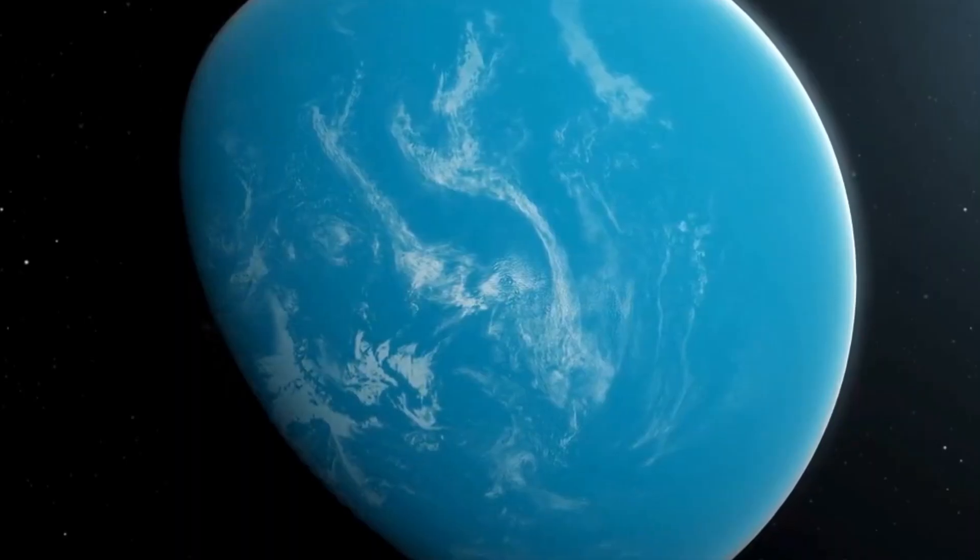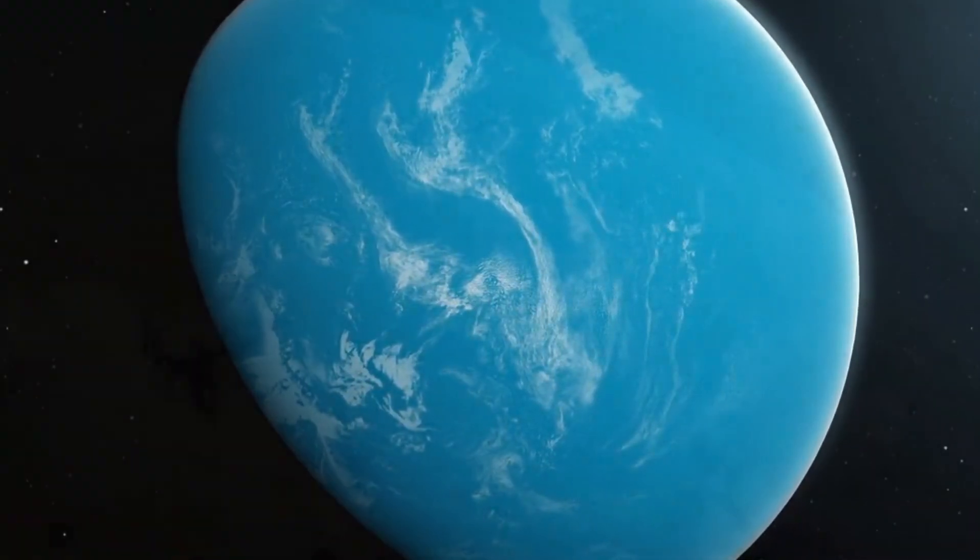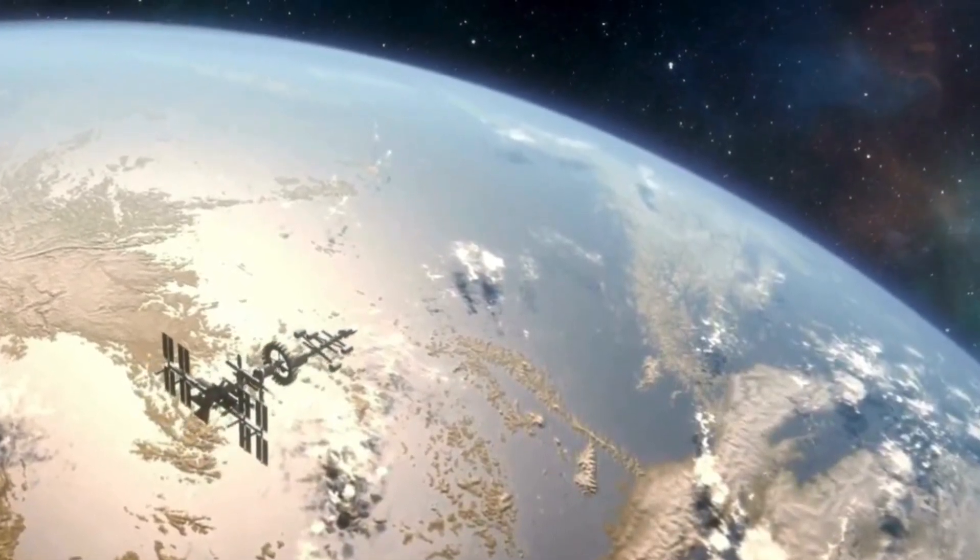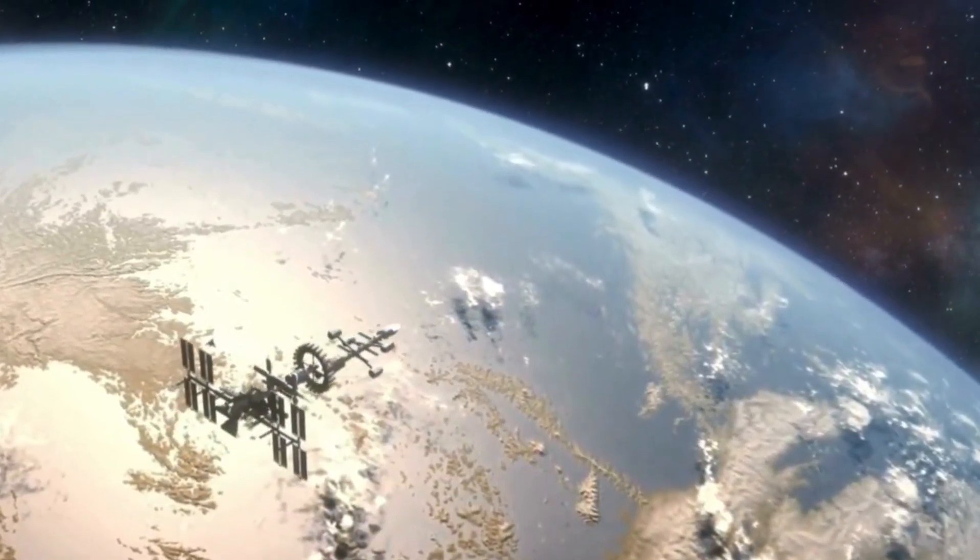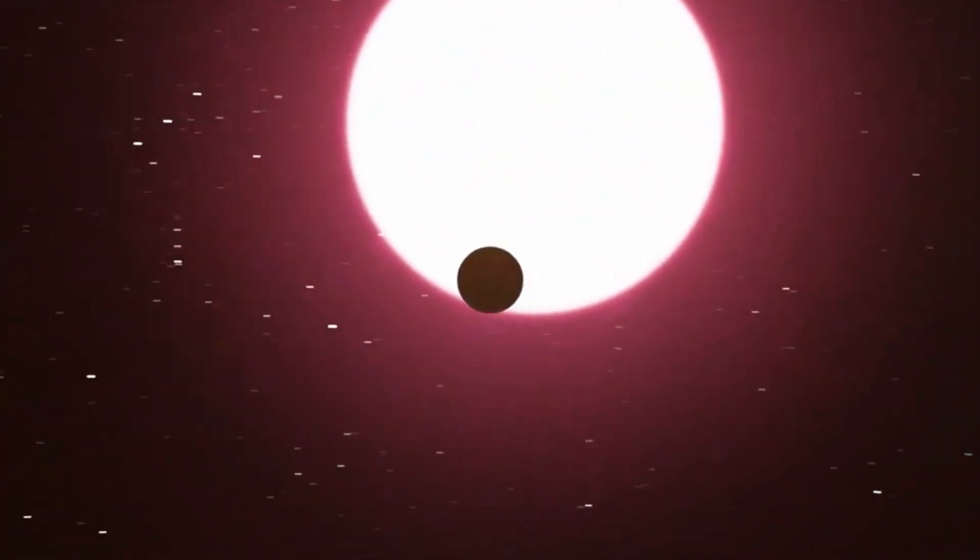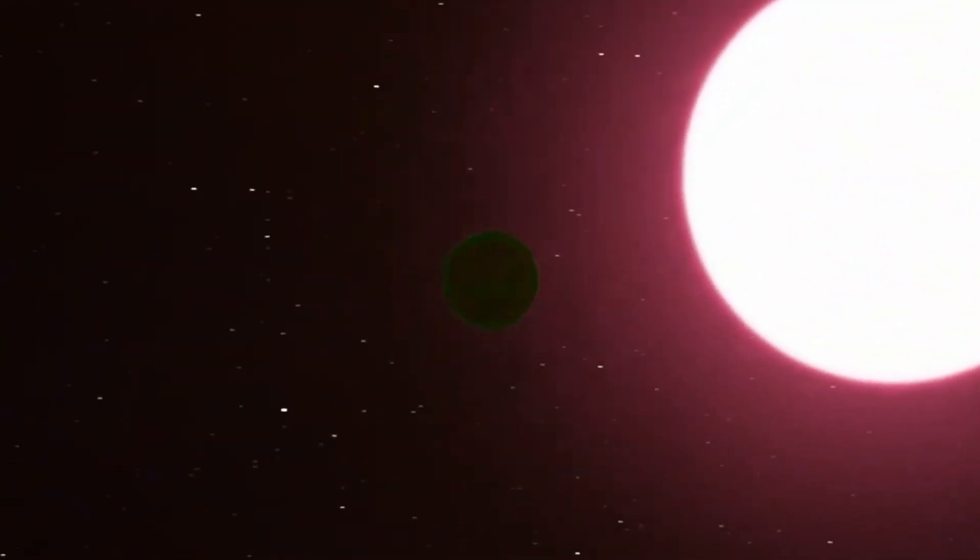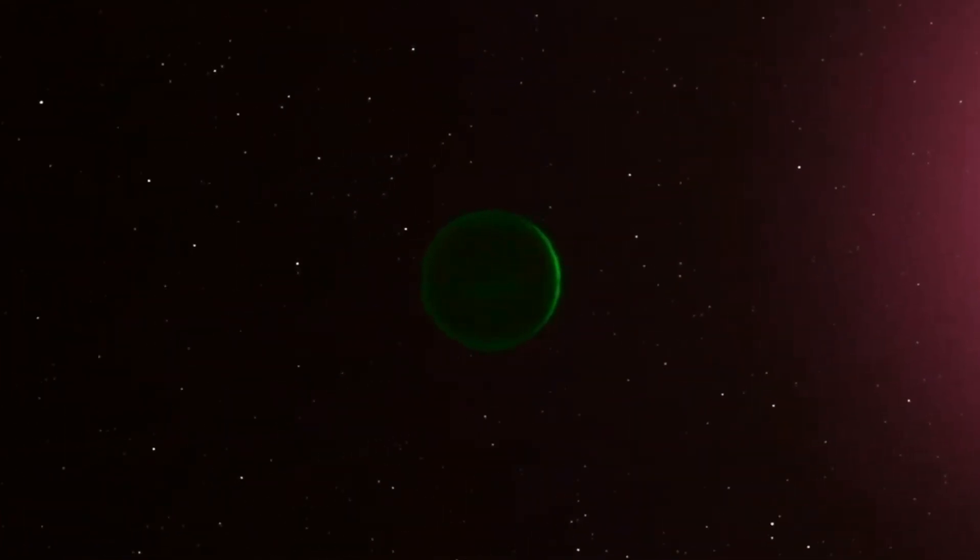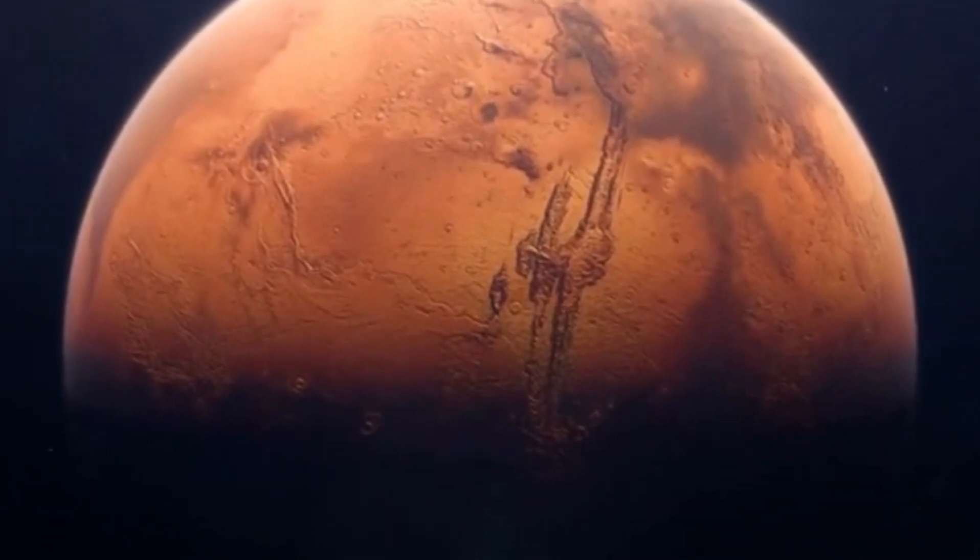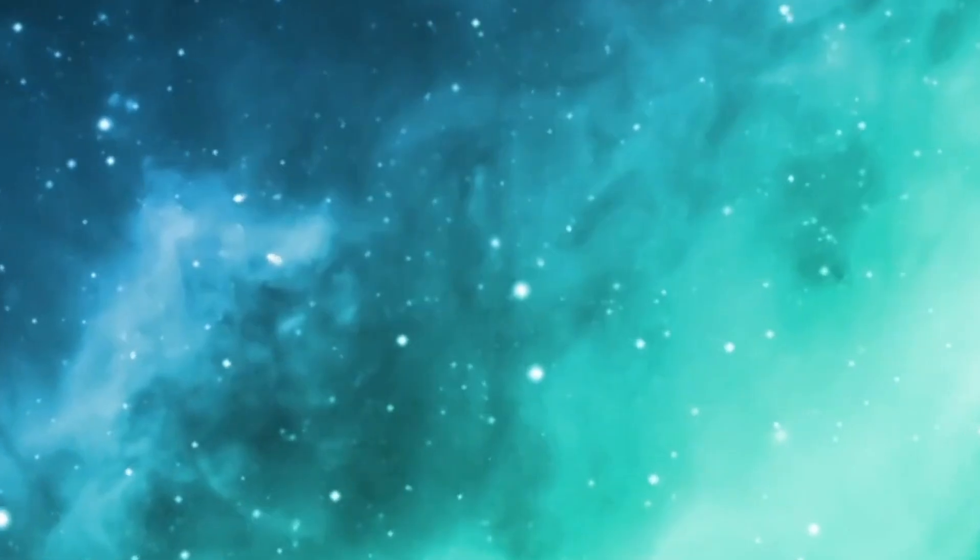However, before we envision an interplanetary adventure to this enticing world, we must confront the harsh reality that Proxima b is far from an idyllic second Earth. Tidal locking, a phenomenon likely present on Proxima b, means that one side of the planet perpetually faces its star while the other is trapped in perpetual darkness. This dichotomy creates an inhospitable environment for any potential life forms.